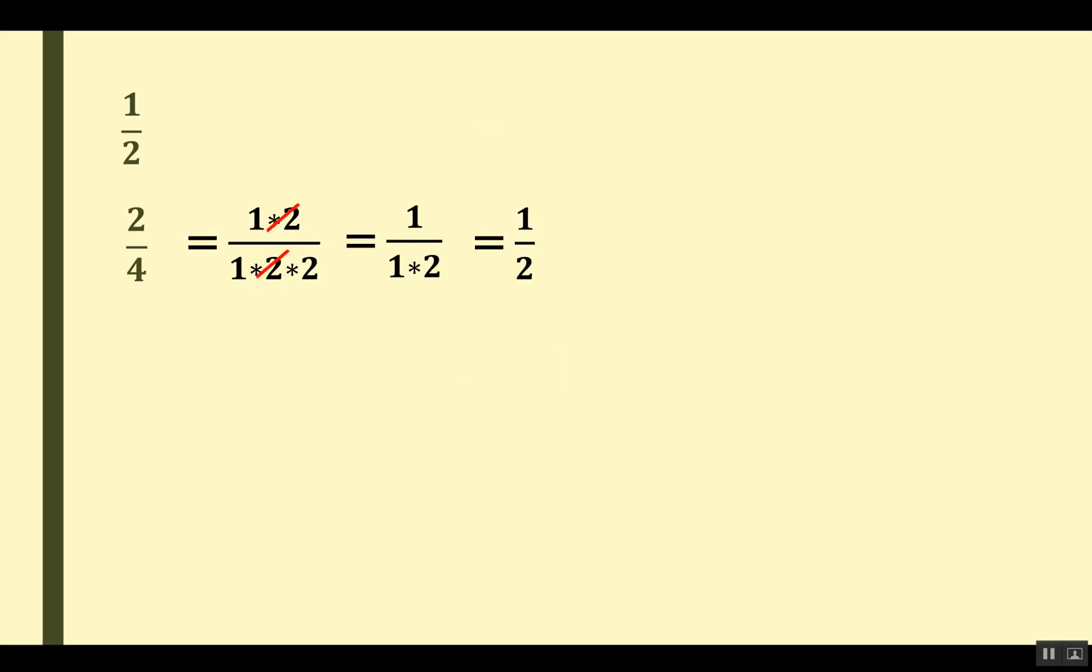We will take another fraction, which is 3 out of 6, and write the prime factors. After writing the prime factors, we have found 3 is common. We will cut 3 from the numerator and denominator, and we will be left with the value 1 out of 2.